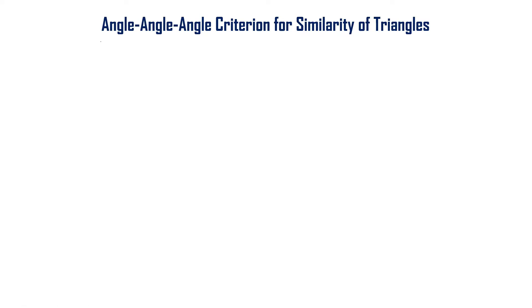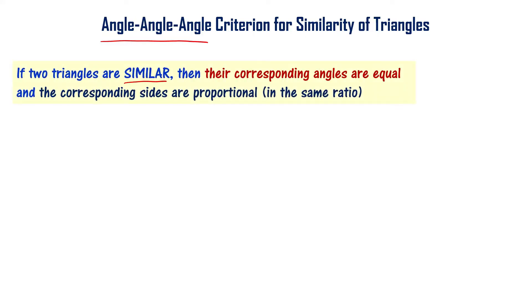Let us now learn about the Angle-Angle-Angle criterion for similarity of triangles. Let's quickly recall what we mean by similar triangles. If two triangles are similar, then their corresponding angles are equal and the corresponding sides are proportional. In other words, if the corresponding angles of two triangles are equal and the corresponding sides are proportional, then we can say those two triangles are similar.